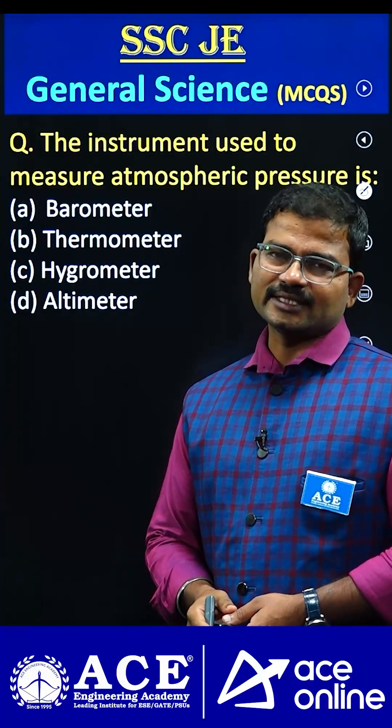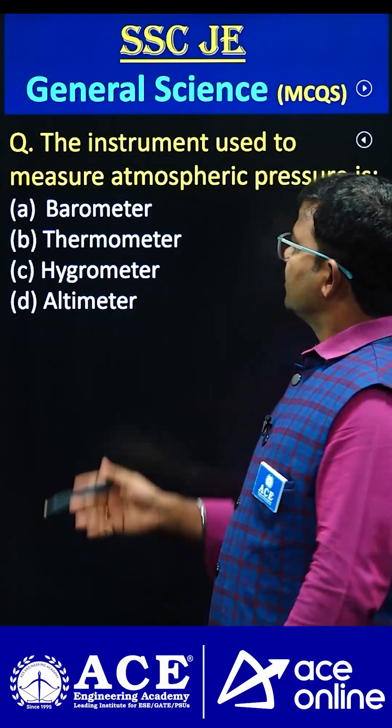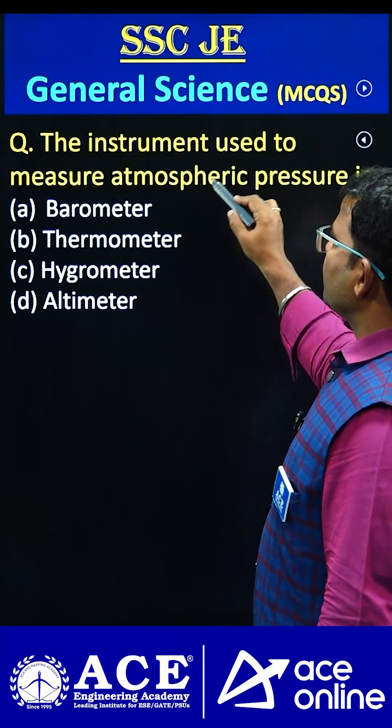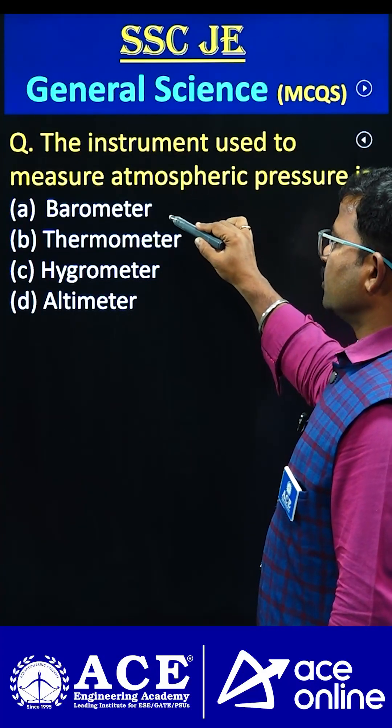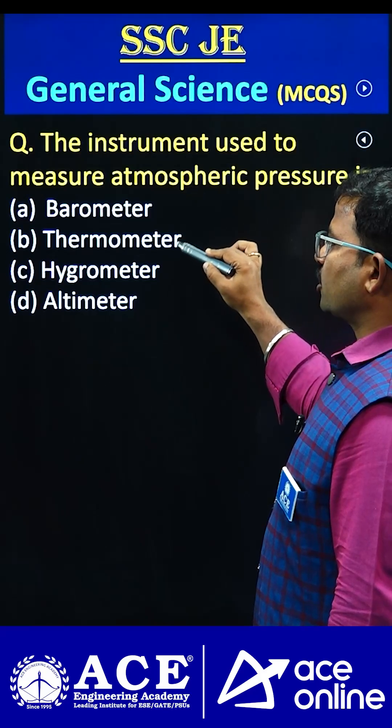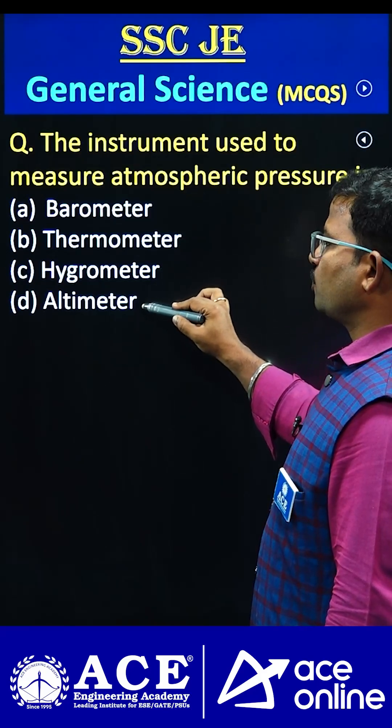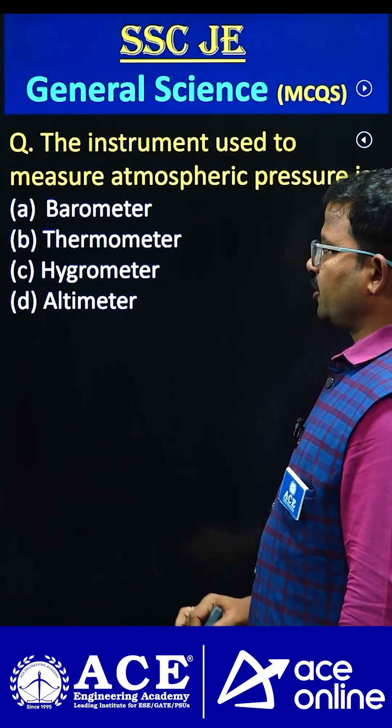Hi students, welcome to ACE Online. The instrument used to measure the atmospheric pressure is: barometer, thermometer, hygrometer, or altimeter.